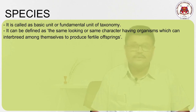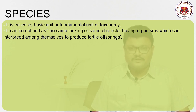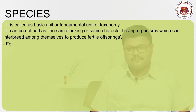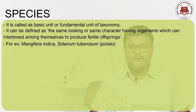Species contains the lowest number of organisms and the highest number of common characteristics. As we move from species to kingdom, the number of common characteristics decreases and the number of organisms increases. According to binomial nomenclature, each species must have a scientific name. According to NCERT, I will take three examples.